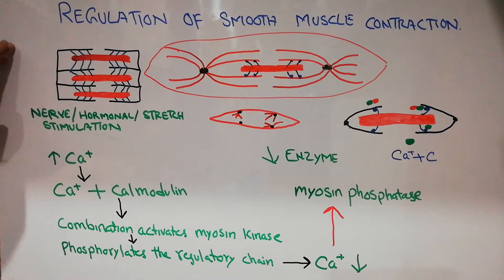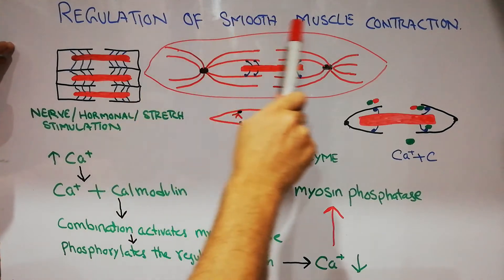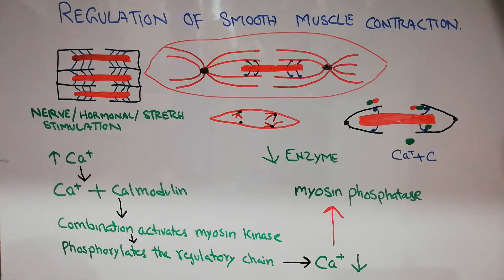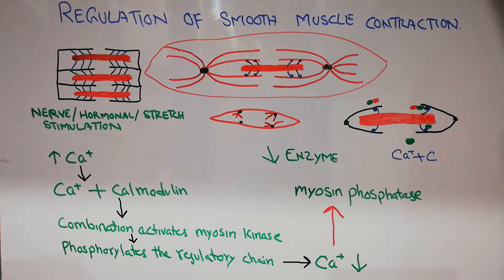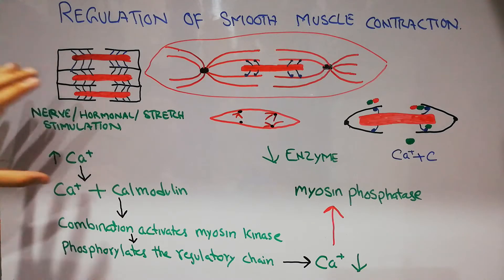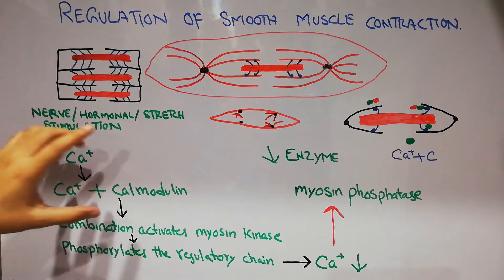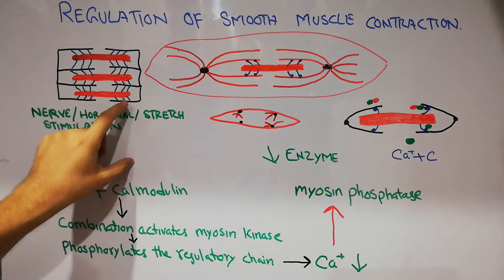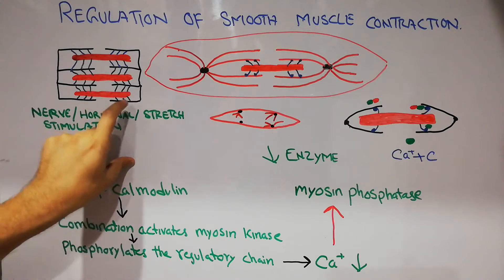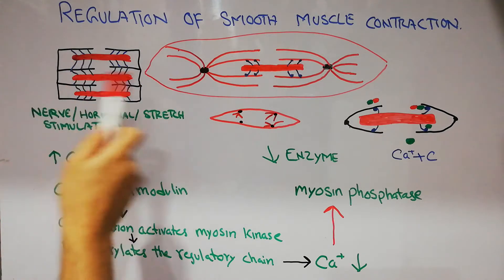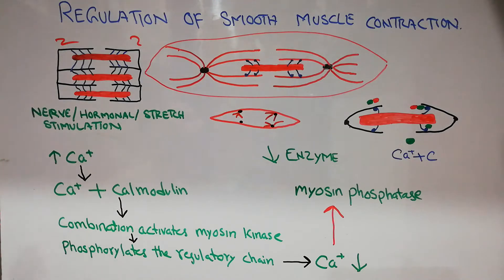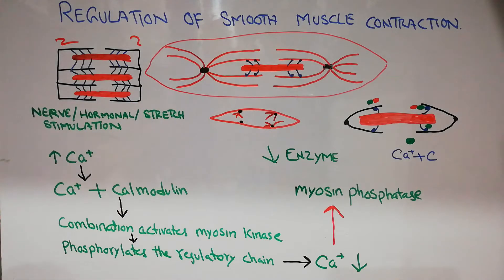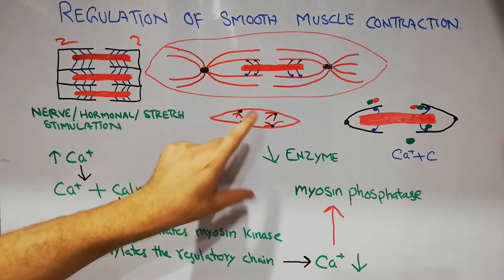Today we are going to discuss the regulation of smooth muscle contraction. Smooth muscle contraction is regulated with the help of calcium. As we discussed in skeletal muscle contraction, when the calcium level increases due to some stimuli, calcium activates the heads of the cross bridges of the myosin filaments, they pull the actin, the distance between two Z-lines decreases, and contraction starts. Similarly, this applies to smooth muscles as well.